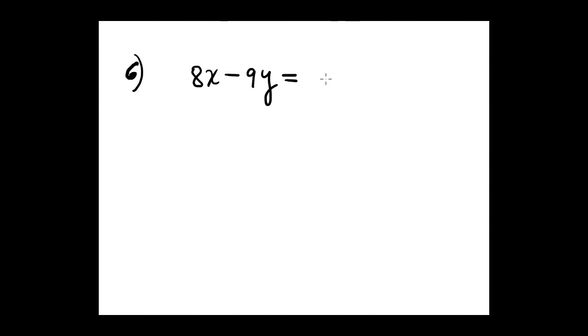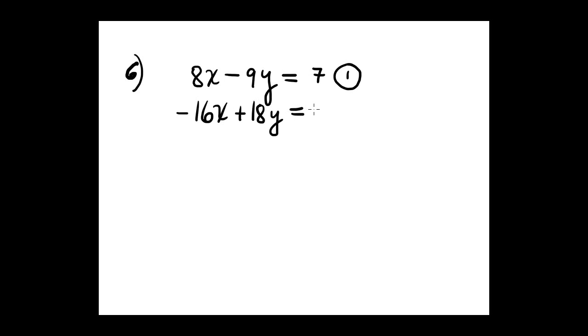Question 6 is similar — determine if the system is consistent or inconsistent. The system is 8x minus 9y equals 7, equation 1, and negative 16x plus 18y equals negative 28, equation 2. We apply elimination: multiply equation 1 by positive 2.